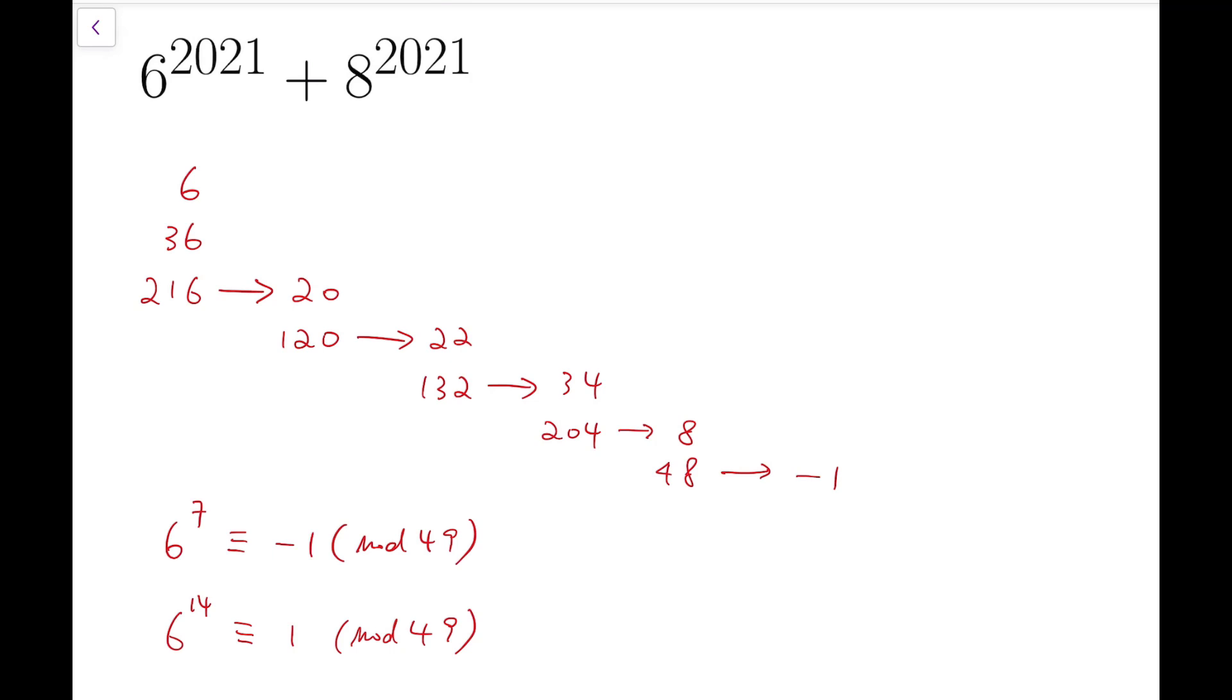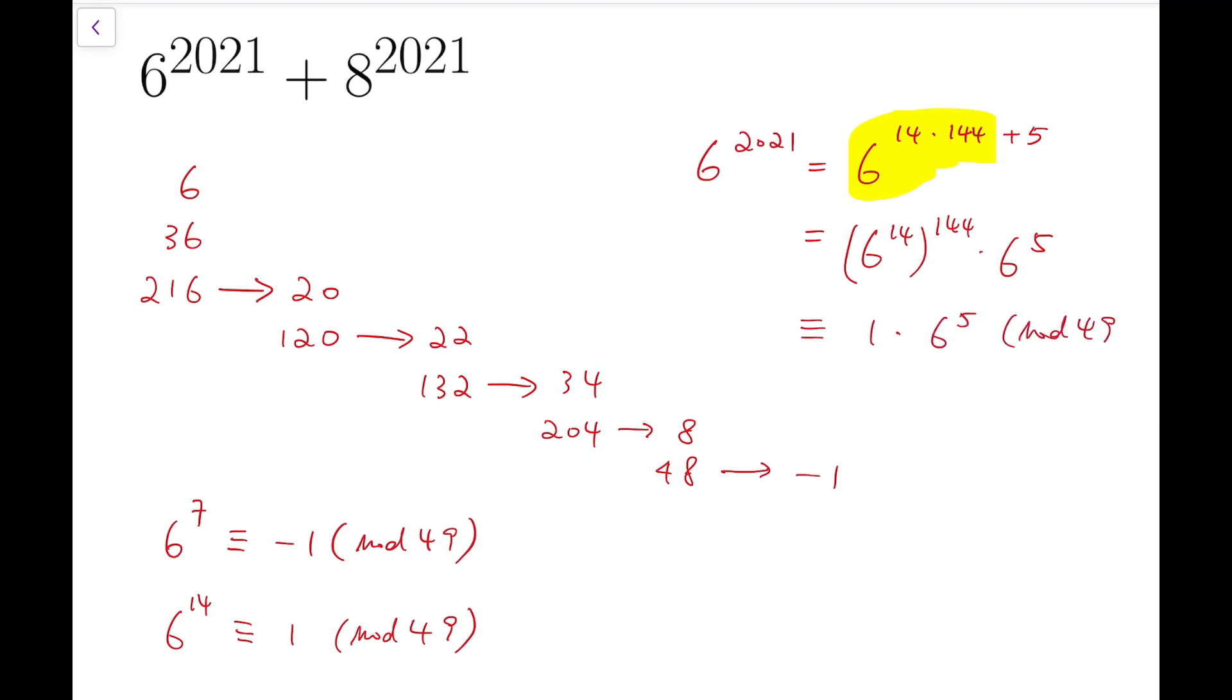I can write 6 to the power of 2021 as 6 to the power of 14 times 144 plus 5. Now this bit could be written as (6 to the power of 14) to the power of 144 times 6 to the power of 5, and it's congruent to 1 times 6 to the power of 5 mod 49.